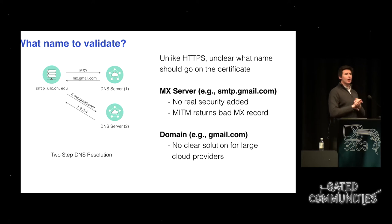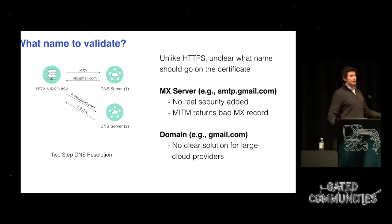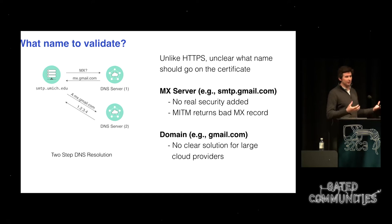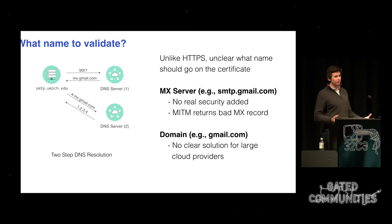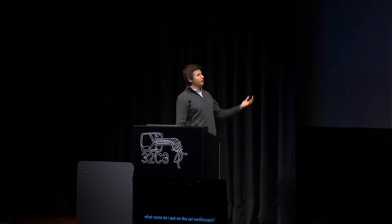We aren't in a position to require STARTTLS from all servers because so many don't support it yet. And it's even more complicated because unlike HTTPS — where you go to a domain and get an IP address right back — when I want to send email to gmail.com, I do an MX record lookup and get back a list of names like smtp.gmail.com, then do a second DNS lookup for the IP address. On the certificate, you could put either the SMTP server name itself or the actual domain. Putting the server name doesn't really help if you're being man-in-the-middled, because the attacker would provide a false name and your certificate would match the false name provided by the attacker.